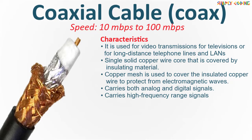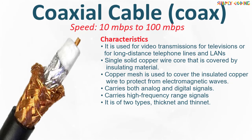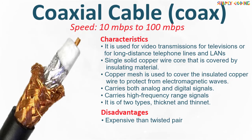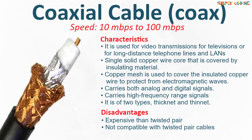It carries high frequency range signals with bandwidth 80 times higher than twisted pair wire. It is of two types: thick net and thin net. The disadvantages of coaxial cable are that it is more expensive than twisted pair and it is not compatible with twisted pair either.